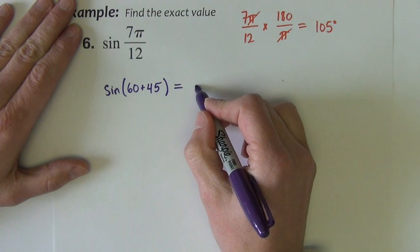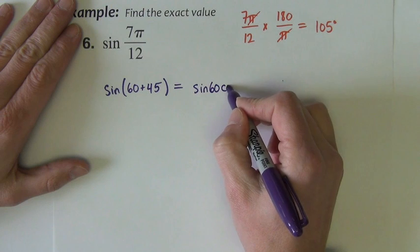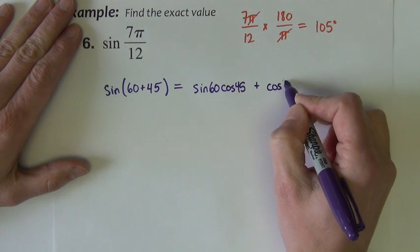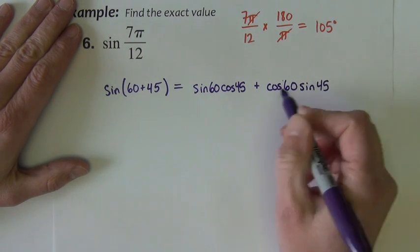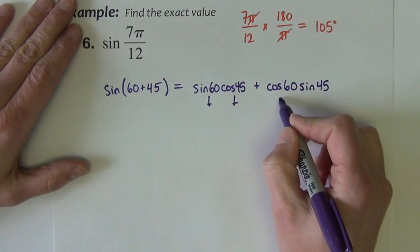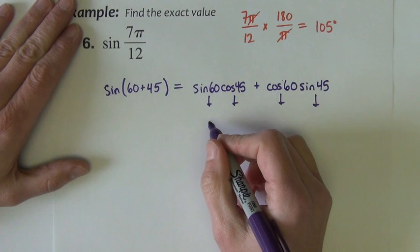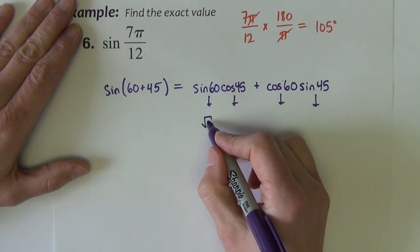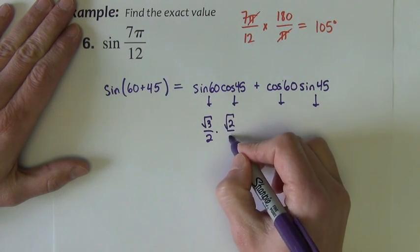Expanding this using the sine formula will be sine of 60 cosine of 45 plus cosine 60 sine 45. I'm going to look all these up now. Off the unit circle, sine of 60 degrees square root of 3 over 2 cosine 45 square root of 2 over 2.